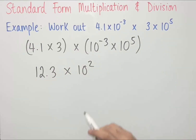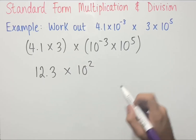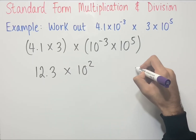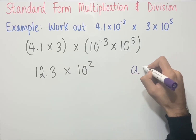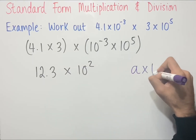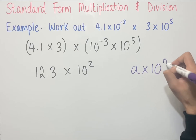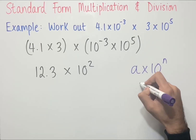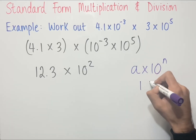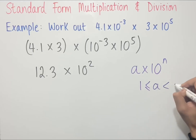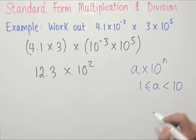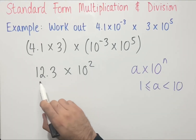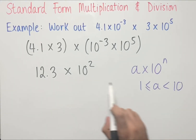We need to check whether this number is in standard form. Remember, a number is in standard form if it is in the form of a times 10 to the power of n, where a is greater than or equal to 1 and less than 10. 12.3 is not between 1 and 10, so we need to rewrite it in the following way.